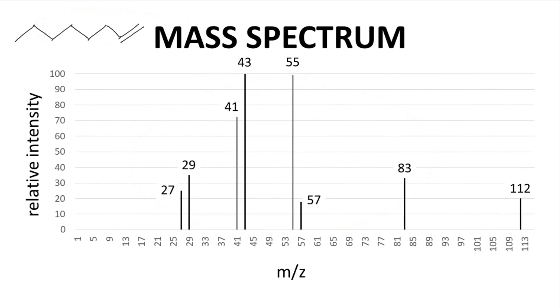In a previous video, we looked at the spectrum of hexane, and we saw many of these same peaks. 57? That's a butyl cation. That's possible in 1-octene. 14 less than 57, a CH2 less, would be 43. That is likely a propyl cation.